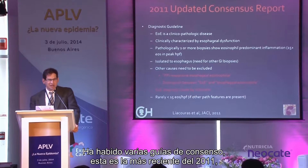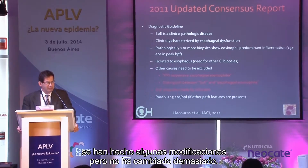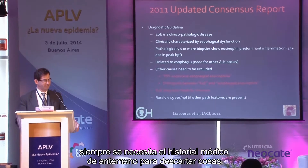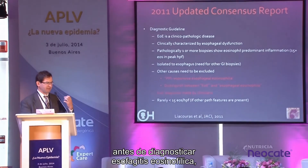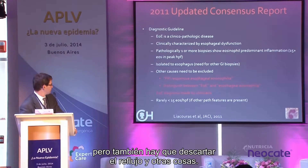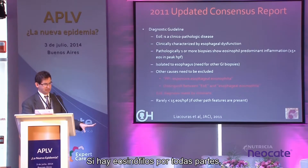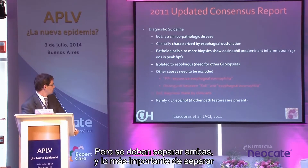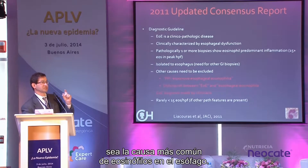There have been several consensus guidelines; the most recent was in 2011. Like most things in medicine, there's not one diagnostic test. For eosinophilic esophagitis you need greater than 15 eosinophils in the esophagus, but reflux needs to be ruled out, as do other things. If you have eosinophils elsewhere in the GI tract — eosinophil gastroenteritis throughout, or eosinophils isolated in the colon — that's a different disease. You really need to separate the two, and the most important distinction is reflux.